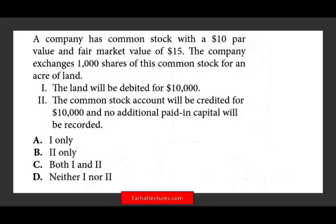Let's take a look at this question. The questions I'm going to be asking you today I would consider basic — in other words, you have to know them. If you find difficulty, that's why I suggest you check out my website because I do have additional resources that could help you. A company has common stock with a $10 par value and a fair market value of $15. The company exchanged 1,000 shares of this common stock for an acre of land.